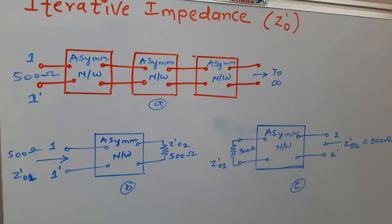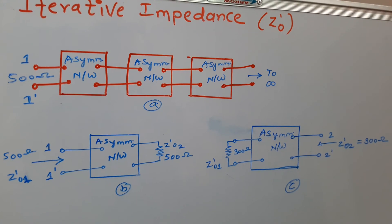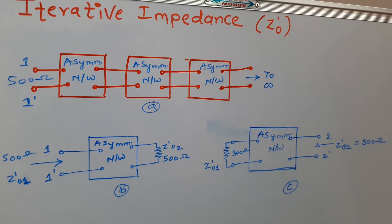When two iterative impedances are equal, then it gives us characteristic impedance and the network becomes symmetrical